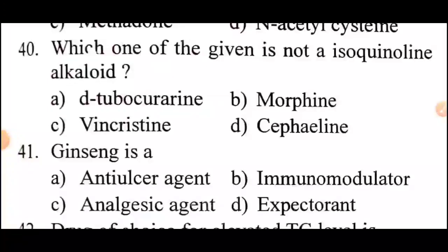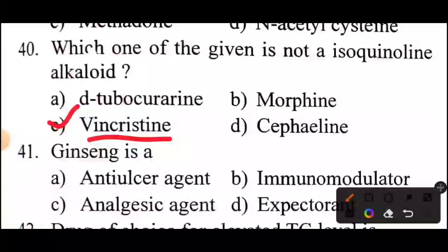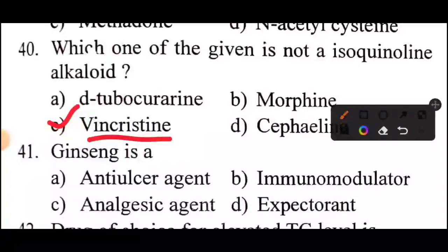Question 40 of 60: Which one of the following is NOT an isoquinoline alkaloid? Answer is Option C: Vincristine.